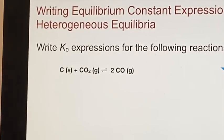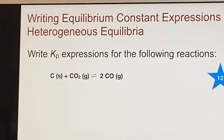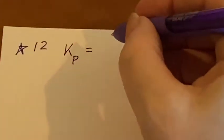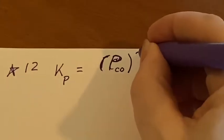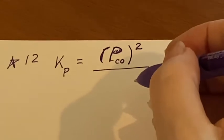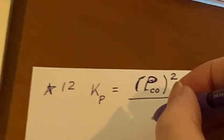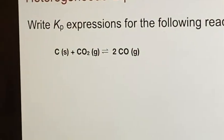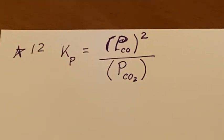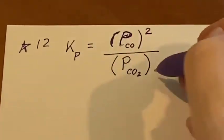They want it in terms of pressure. A K sub P products on top. This is indeed a gas and can give us pressure. And this is squared because there was a 2 up here. Over, the carbon is a solid. It's not going to be in here. So it will simply be the pressure of the carbon dioxide on the bottom. And that would be the entire expression.